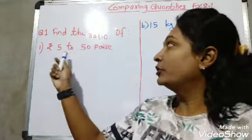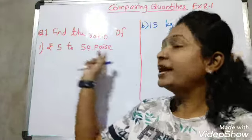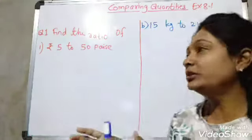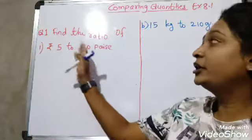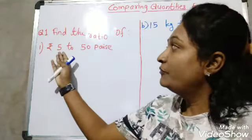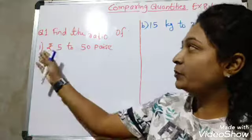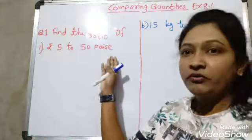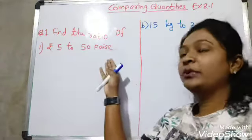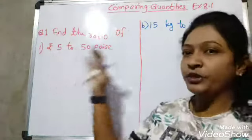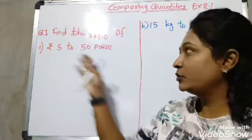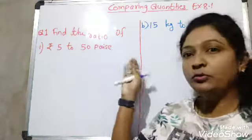Here we have rupees 5 and 50 paise — both quantities need to be in the same unit. Rupees 5 is in rupees and 50 paise is in paise. So we will convert rupees 5 into paise, because it is easier for calculation. If we convert 50 paise into rupees, it becomes a decimal, which is a little more difficult.